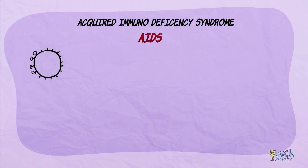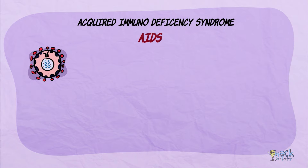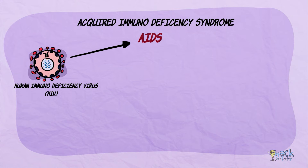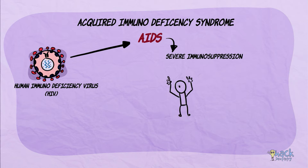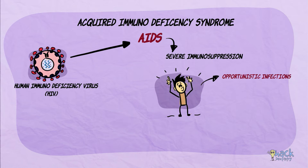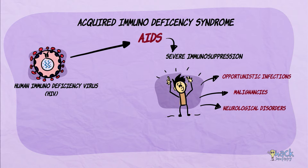Acquired immunodeficiency syndrome (AIDS) is an infection caused by the retrovirus human immunodeficiency virus. This disease is characterized by severe immunosuppression, making the patient susceptible to various opportunistic infections, malignancies, and neurological disorders.